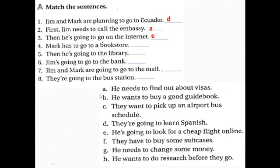Then Mark has to go to a bookstore — مارك بدو يروح على المكتبة — because he wants to buy a good guidebook — بدو يشتري كتاب مرشد معهم يكون بمثابة مرشد في هذه الرحلة. He is also going to the library because he wants to do research before they go — بدو يعمل البحث قبل ما يذهبوا في هذه الرحلة — to understand the nature of the region.